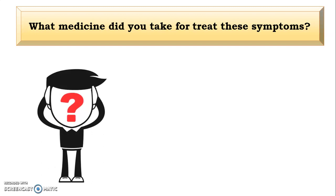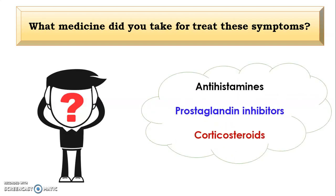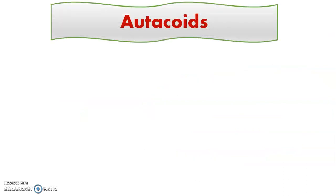What type of medicine did you take to treat these types of symptoms? Think for a while. Yes, the agents used are known as antihistamines, prostaglandin inhibitors, and corticosteroids. So, first of all, let's start with the autocoids.